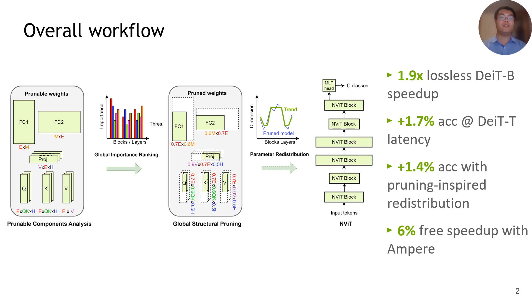As an overview, this work aims to find efficient vision transformer architecture via global structural pruning. We first provide a systematic analysis on all prunable components in the ViT model. Then we perform global structural pruning based on a Hessian-aware importance ranking of all components, leading to a family of efficient NViT models with 1.9x lossless DeiT-based speedup and 1.7% accuracy improvement at DeiT-tiny latency. With multiple pruned models, we observe the trend in parameter distribution and dimension scaling to come up with pruning-inspired parameter redistribution with up to 1.4% accuracy improvement.